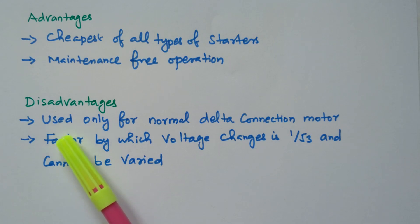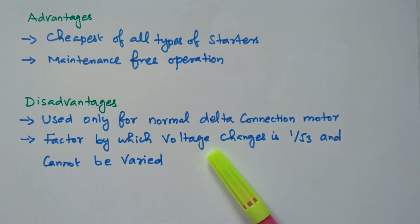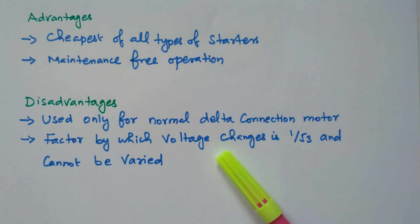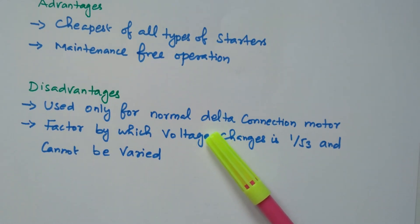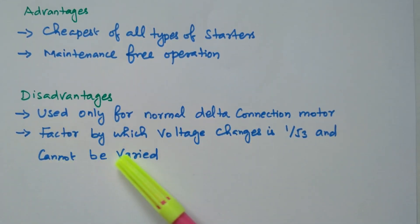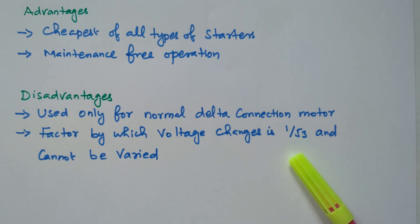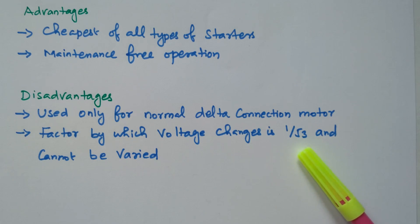Now the disadvantages: it is used only for normal delta connection motors. If the stator winding is connected in delta, then only we can use this starter, because the stator winding is initially connected in star and finally in delta. So we need a delta-connected motor. Also, the factor by which the voltage is changed is fixed at 1 by root 3 — we are applying only 1 by root 3 of the voltage at the beginning, and it cannot be varied. We cannot change it to a lower or higher value; it is always 1 by root 3 times the rated voltage.